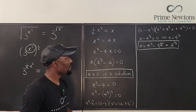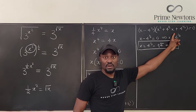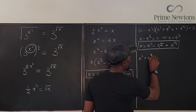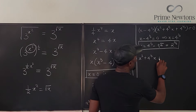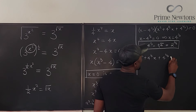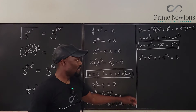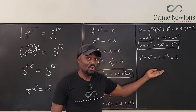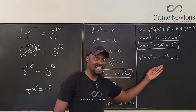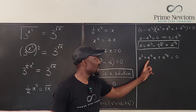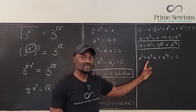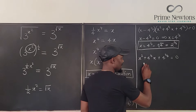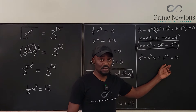The second factor is x² + 4^(1/3)·x + 4^(2/3) = 0, which is a quadratic. If you pay attention, b² is less than 4ac, so the discriminant is negative — this gives no real solutions here.